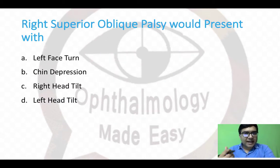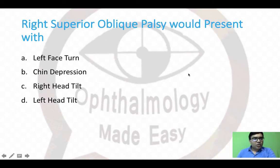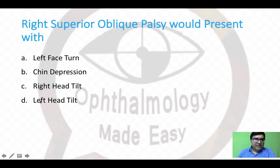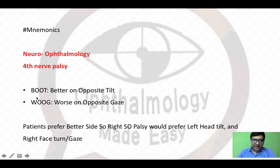The first question is: right superior oblique palsy would present with left face turn, chin depression, right head tilt or left head tilt? The answer here is left head tilt.